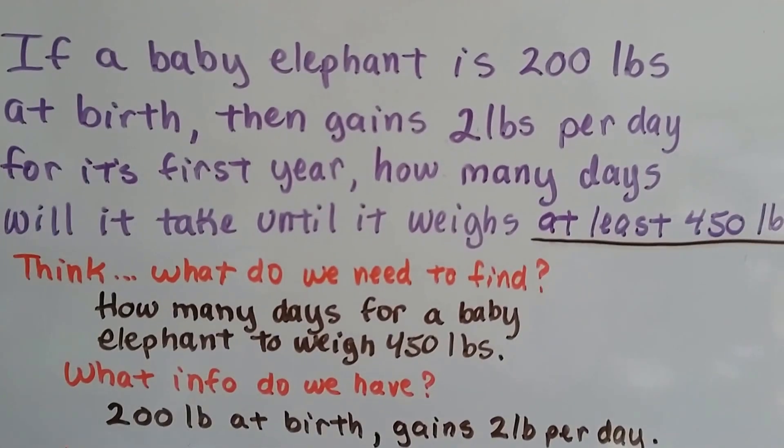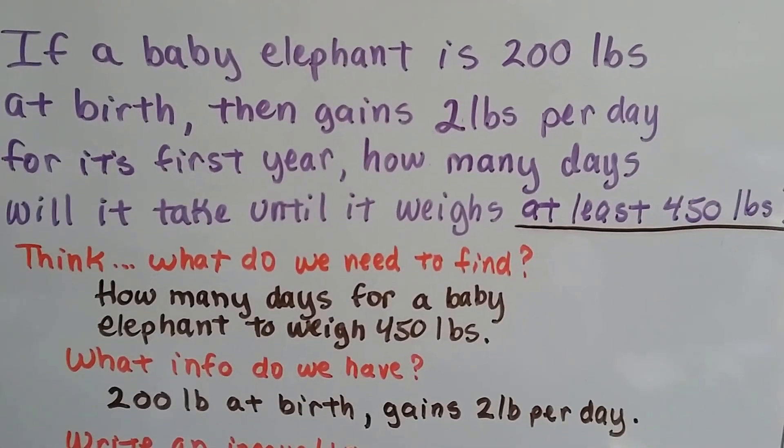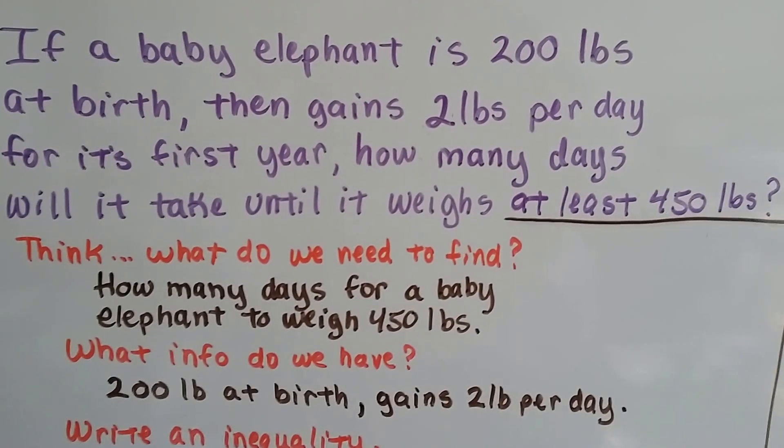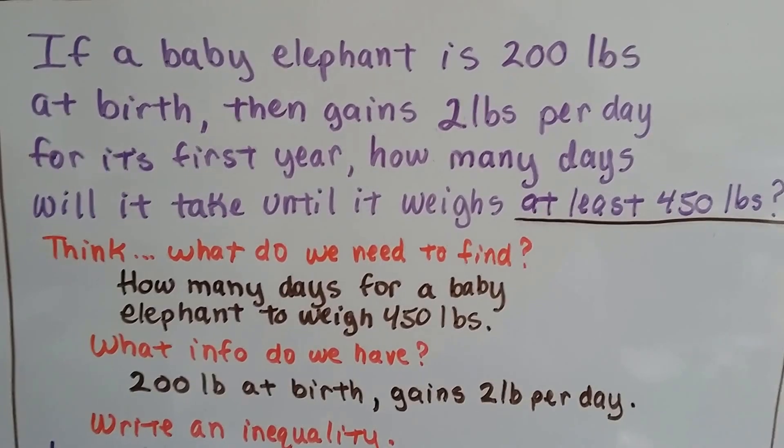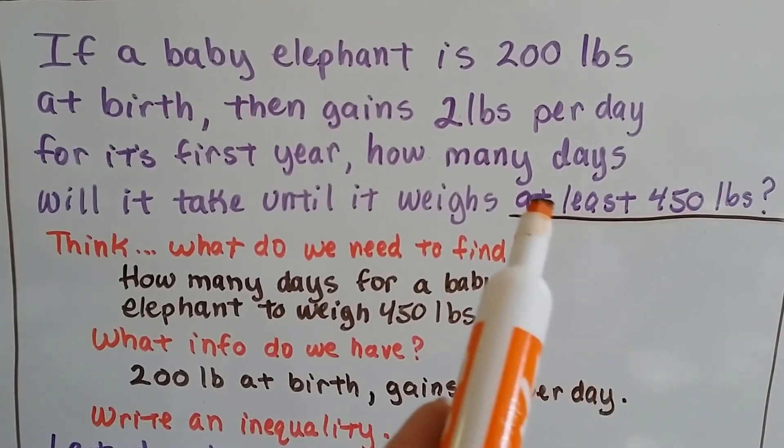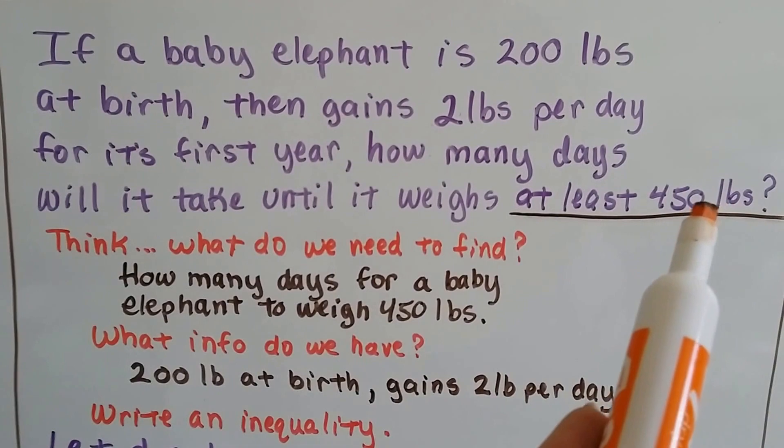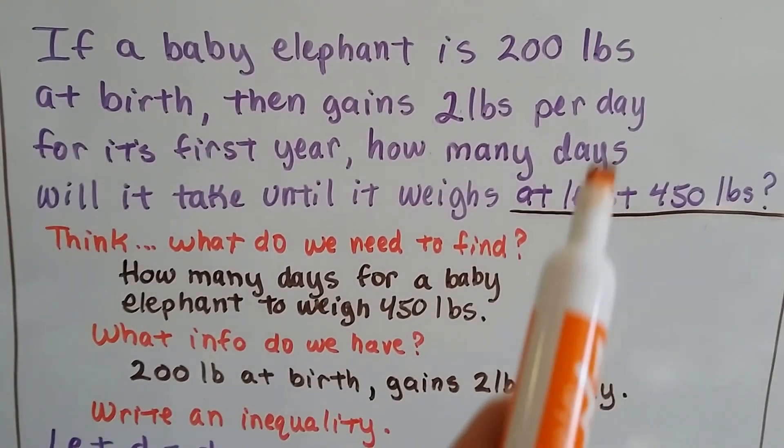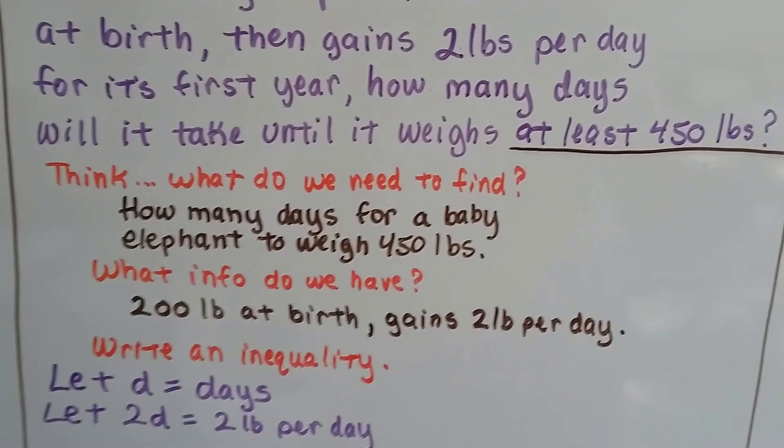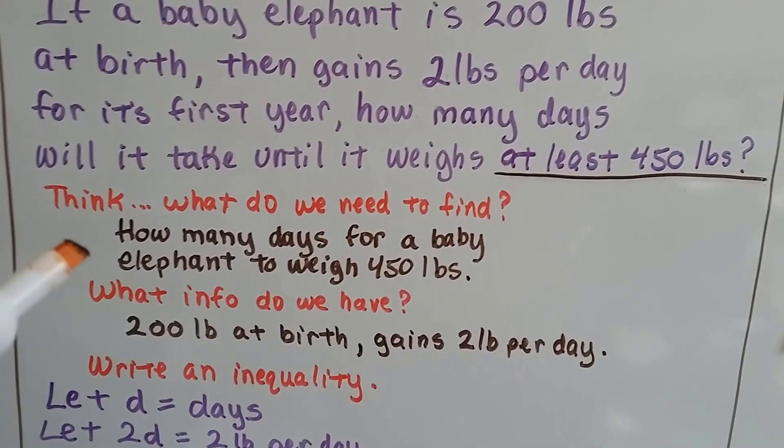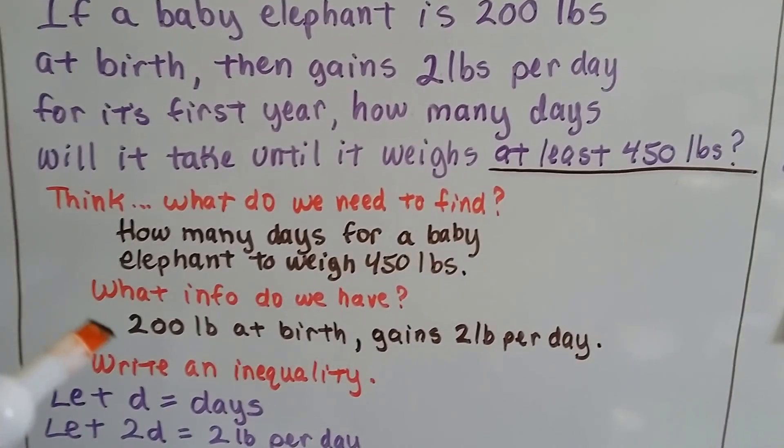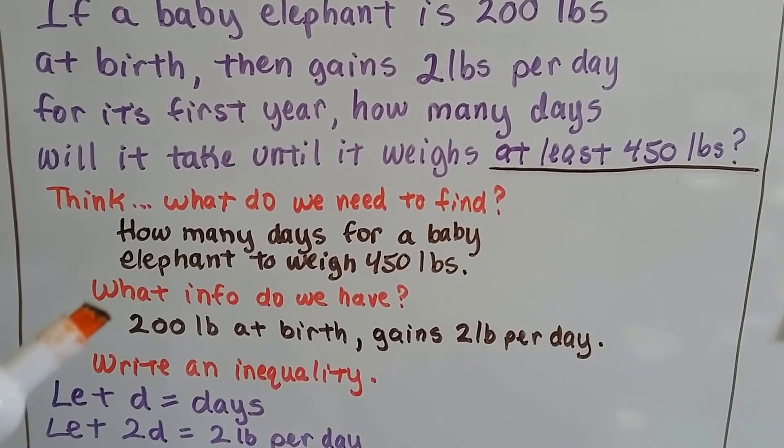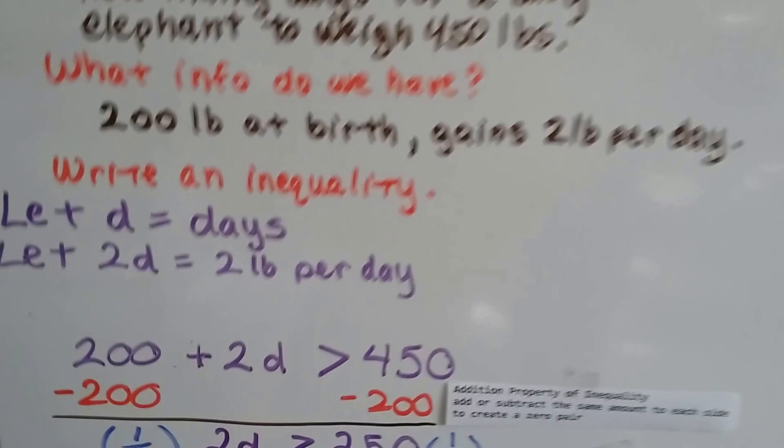Let's take a look at this first one. If a baby elephant is 200 pounds at birth, then gains 2 pounds per day for its first year, how many days is it going to take until it weighs at least 450 pounds? Now it doesn't say it has to weigh 450. It says at least 450 pounds. So it could weigh more than that. That tells us it's an inequality. So we think, what do we need to find? We need to find how many days for a baby elephant to weigh 450 pounds. What info do we have? That it's 200 pounds at birth and it's going to gain 2 pounds per day.